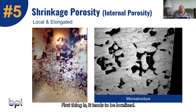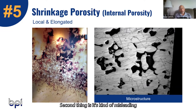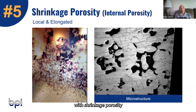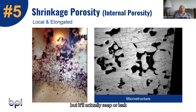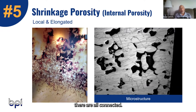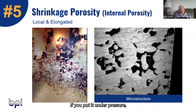First thing is it tends to be localized. Second, it's misleading — you can machine across the surface with shrinkage porosity and it'll look good, but it'll actually seep or leak. If you look at the picture on the right, you can see how the interstitials are all connected. You may have a part that looks very good but if you put it under pressure you'll actually see it seeping.